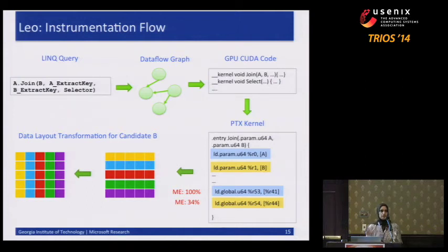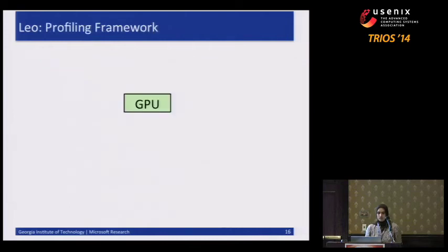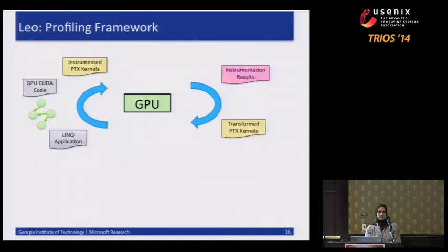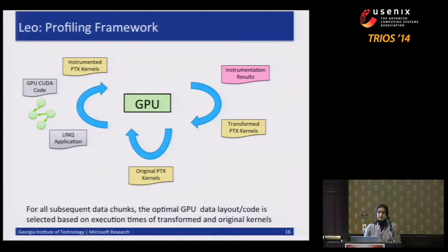How does this fit into the larger profiling framework? We need three iterations. The first iteration performs the instrumentation steps — take the LINQ application, generate the data flow graph, GPU code, instrument it, and execute on the GPU. In the second iteration, use the instrumentation results to generate optimized kernels and execute on the GPU. In the third iteration, simply execute the original binaries. We then measure the runtime for the transformed kernels versus original kernels and choose the more optimal layout for all subsequent chunks. That's how the profile-guided optimization works.